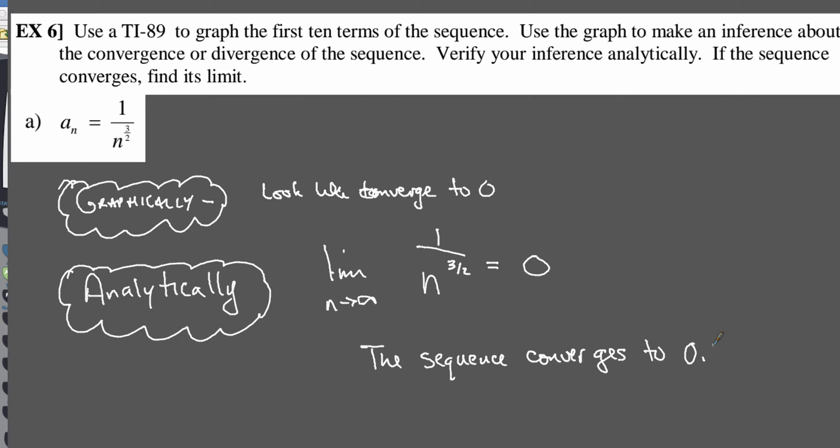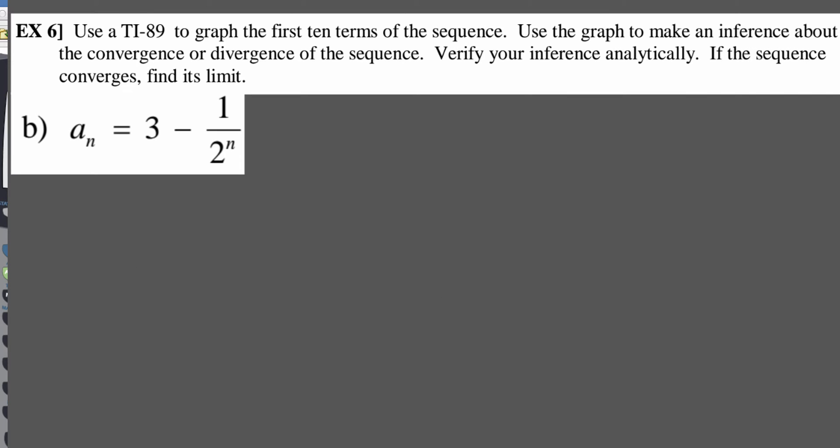To summarize: graphically take a look at it, then analytically use the limit process to verify what we think is happening from the picture. Now let's look at another example using the same approach. This time we've got 3 minus 1 over 2 to the n. This one's a little different — go ahead and graph that in your graphing calculator, then we'll analyze it using the limit process.